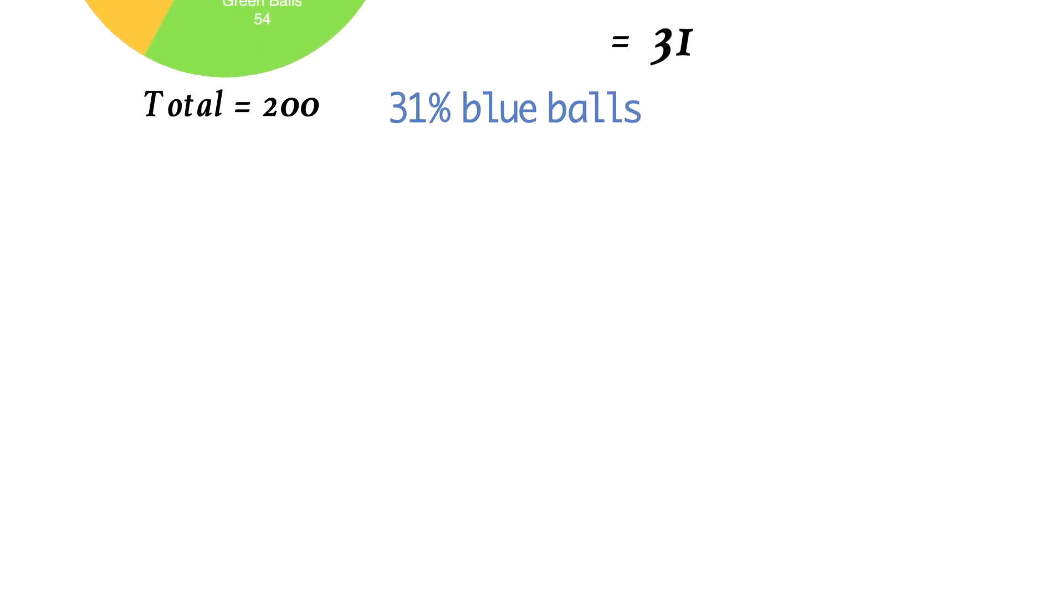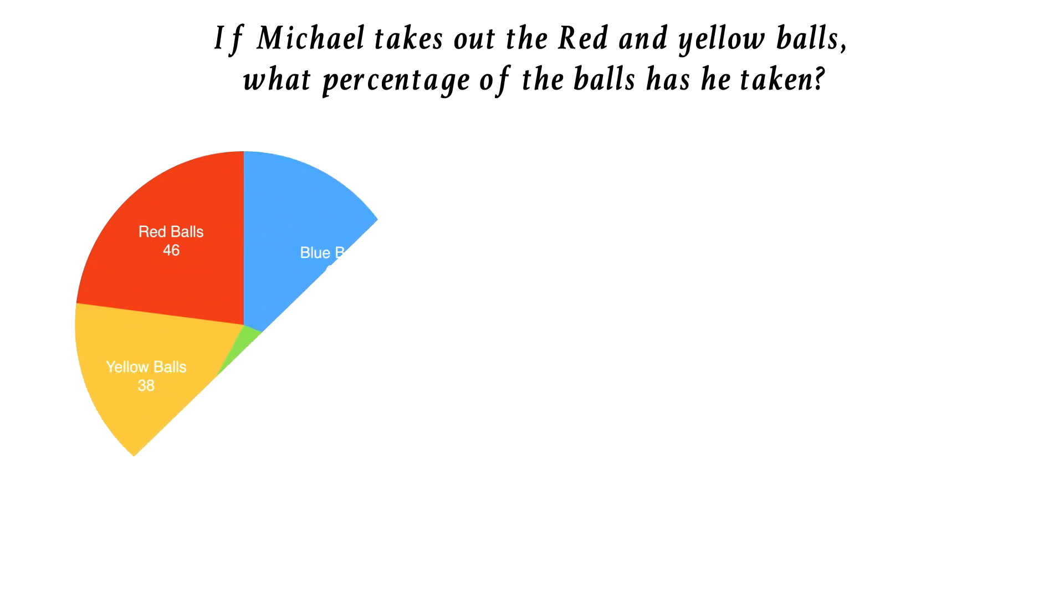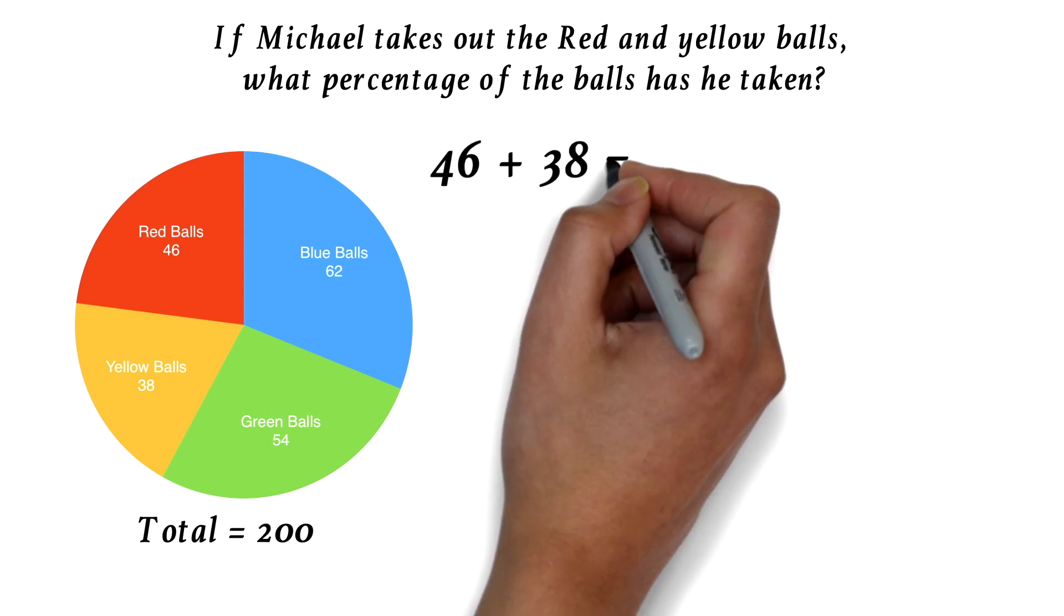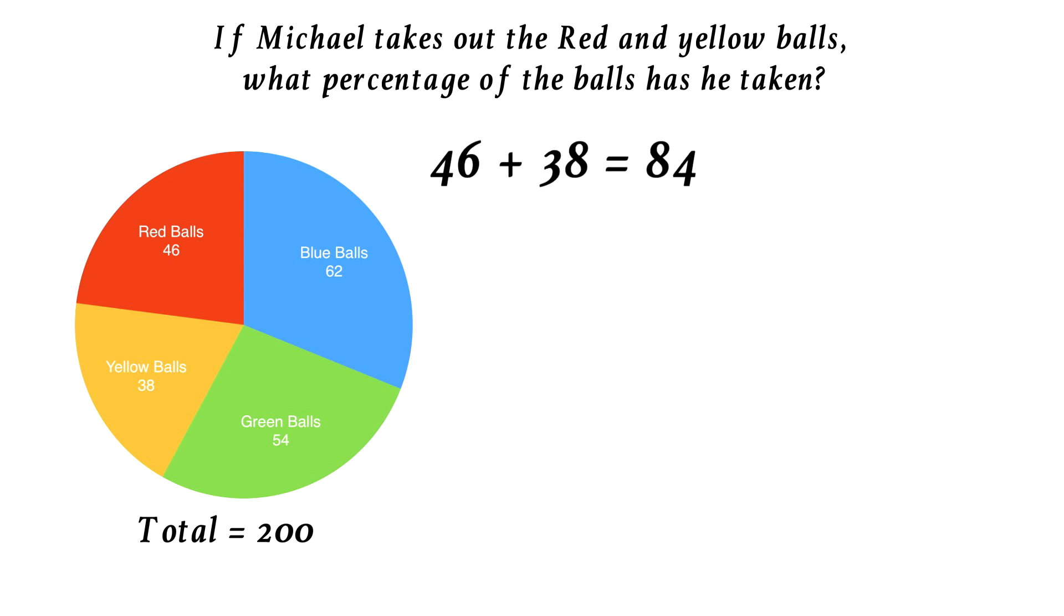You can be asked other questions here, but the ideal is the same. Example, if Michael takes out the red and yellow balls, what percentage of the balls has he taken? The only work here is that now you'll have to add the red and yellow balls. So we have 46 plus 38, which is 84. The percentage is found the same way. 84 over 200 times 100. You'll work it out to get 42%.